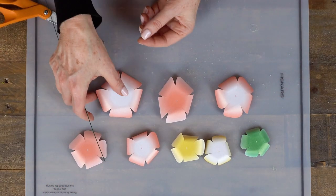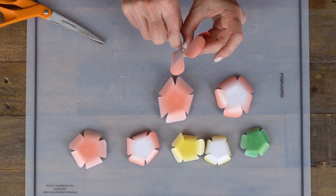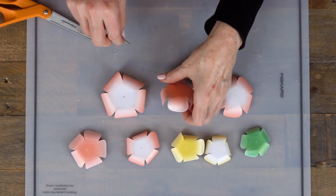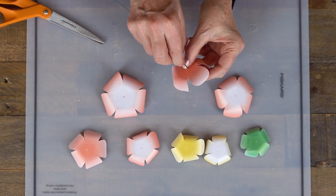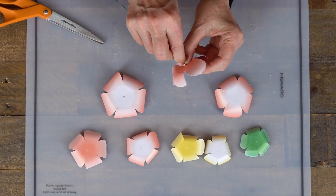Before I assemble I'm going to go ahead and punch a hole in the back of seven and eight because we're going to add a stem at another point.